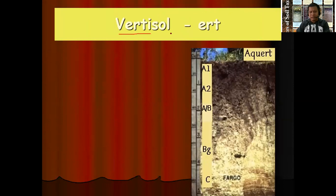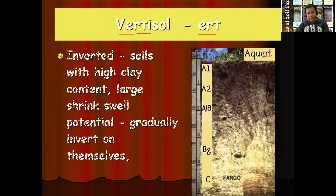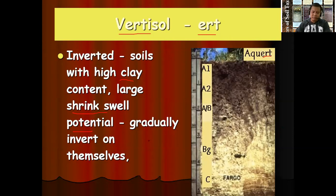Another soil order is vertisol. The formative element of vertisols is ERT. For example, 'aquerts' — the last formative element is ERT — belongs to soil order vertisol. This is an inverted soil with high clay and large shrink-swell potential. It will shrink during dry periods and swell, possibly causing landslides, during rainy seasons. It gradually inverts on itself, changing from cracking to swelling depending on the amount of water and temperature in the environment.